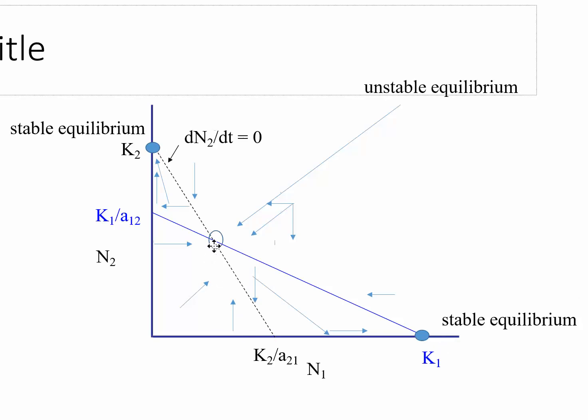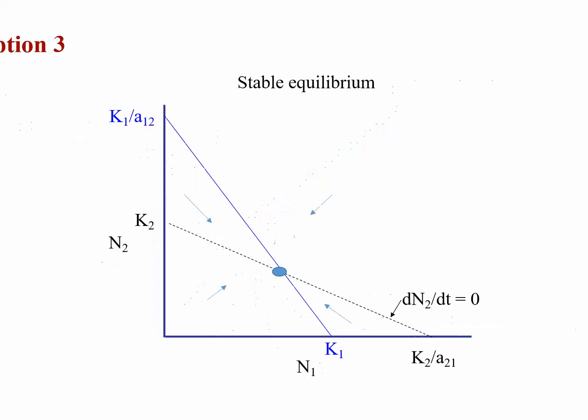Where the two lines cross in the middle, shown as an open circle, that is an equilibrium point as well. You're on the zero net growth isocline for both species exactly where the lines cross, so if you had exactly that number of N1 and N2, you'd be at the carrying capacity for both species. However, it is referred to as an unstable equilibrium because if you move off that point in any direction, the subsequent population trajectory moves toward either one of the stable blue circles and not back toward that equilibrium point.